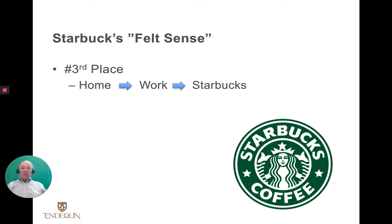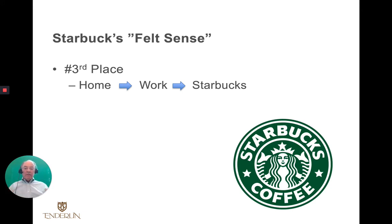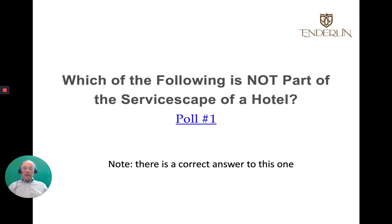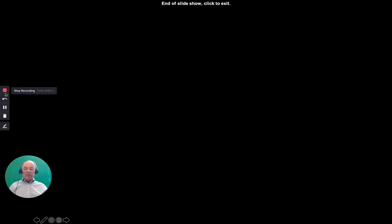Using servicescape — some other examples. Think of Starbucks. One of the concepts they bring out is their felt sense — they want to be the third place: home, work, and Starbucks. How do you set up the servicescape, the physical evidence, so that it feels like a third place? Here's another poll question — I'd like you all to take it, we can talk about it in class. Unlike the others, this one has a correct answer. And that completes this particular lecture. Thanks.